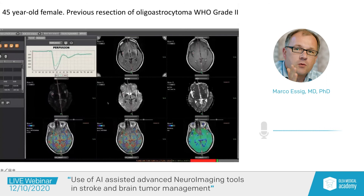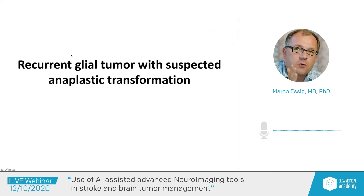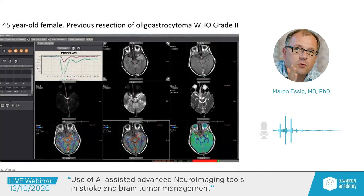We have the possibility to have those data automatically processed and made available to the clinical team for decision-making, and also available for treatment planning. Here's another patient — a 45-year-old female who had a previous resection of a low-grade oligoastrocytoma. You can see residual or recurrent tumor tissue changes. Based on the imaging results, including perfusion information, we could tell this is a recurrent glial tumor again with suspected anaplastic transformation, because of the high blood volume as seen here in the region of interest analysis.